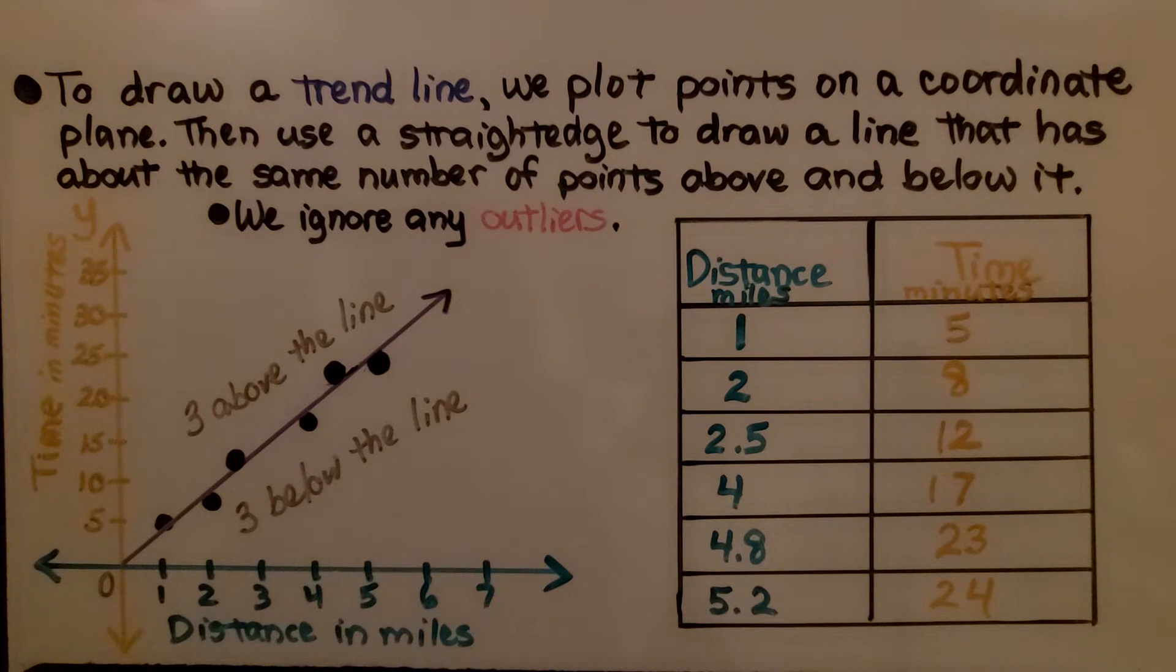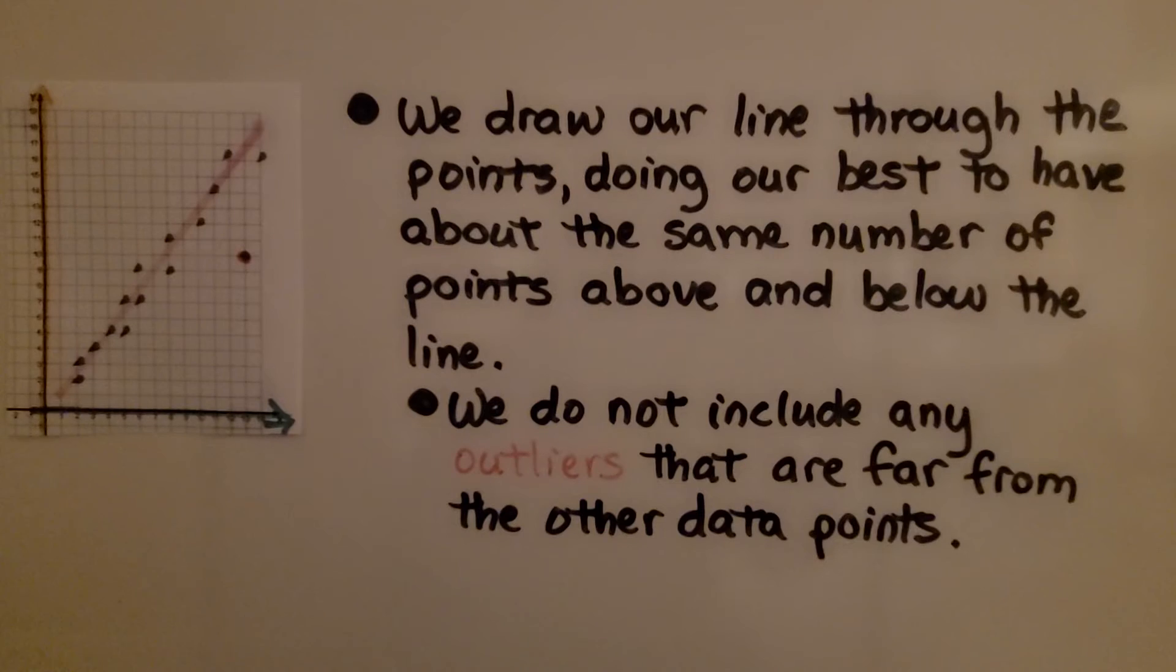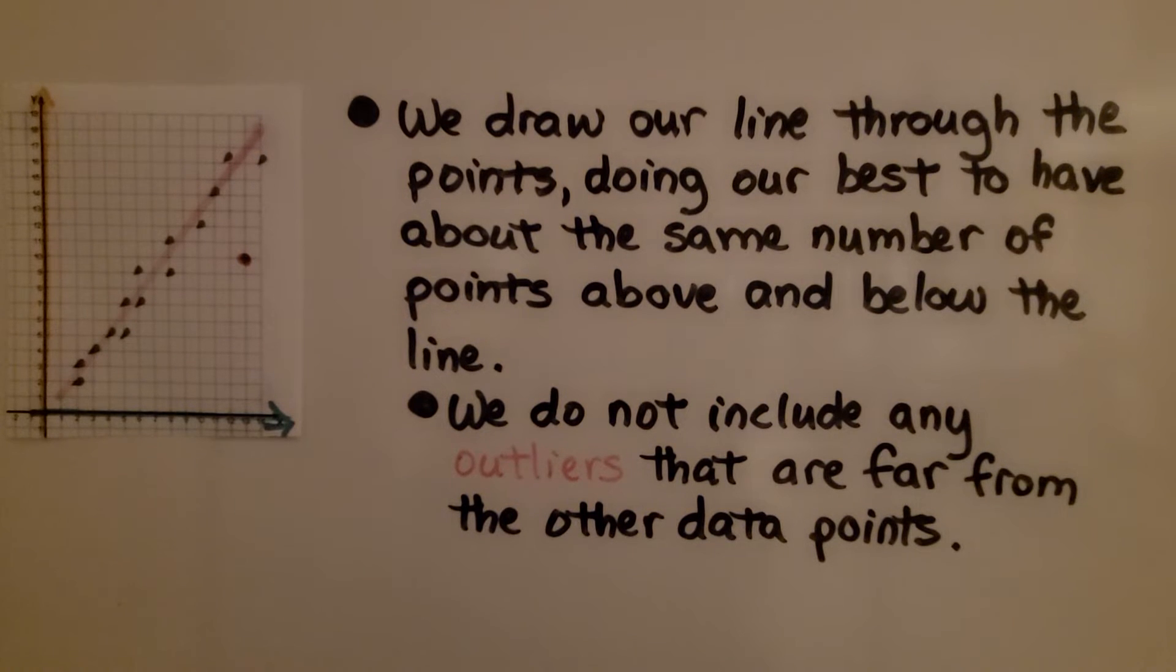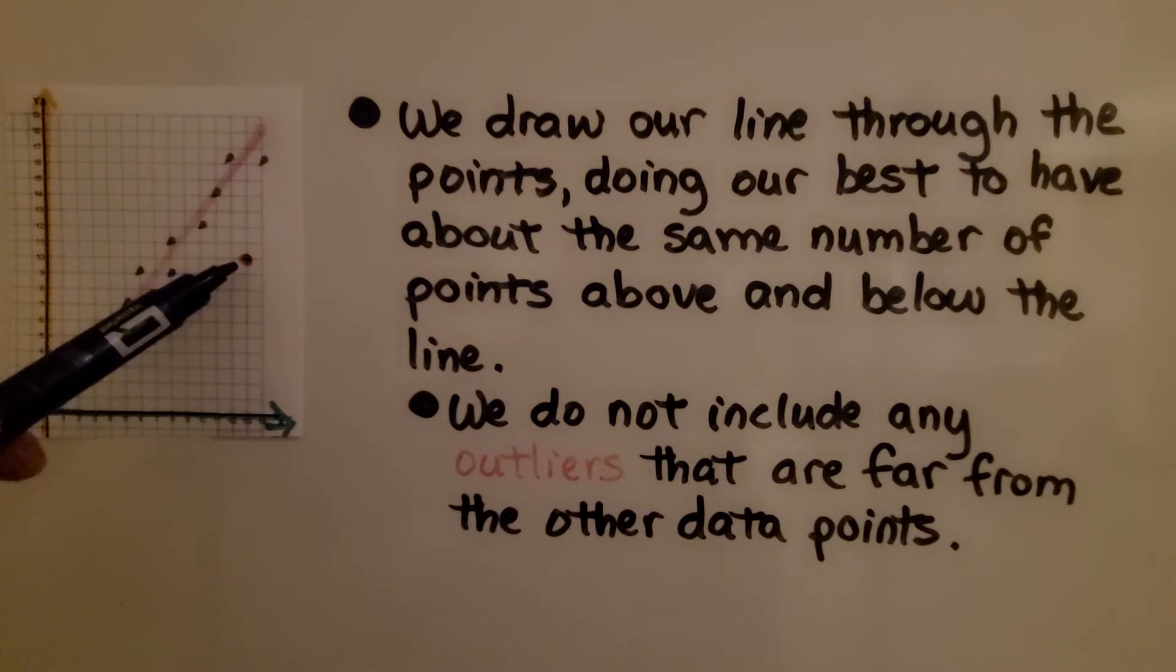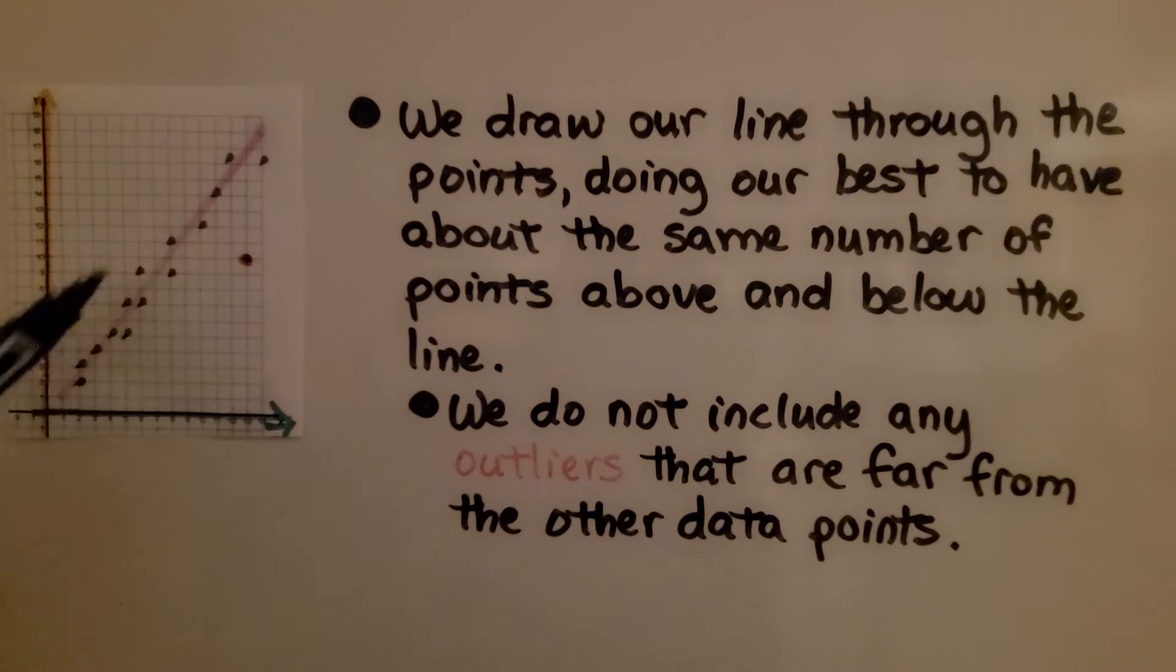We ignore any outliers. If we have a point way out here that's not going with the rest of the data, we just ignore it. We draw our line through the points, doing our best to have about the same number of points above and below the line. We do not include any outliers that are far from the other data points. We may end up drawing the line through some points, or we may not.